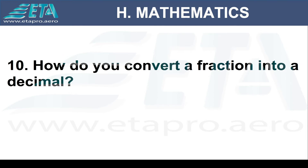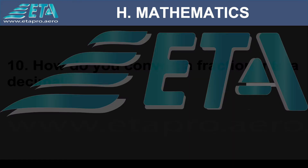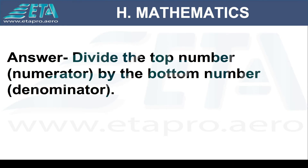How do you convert a fraction into a decimal? Divide the top number (numerator) by the bottom number (denominator).